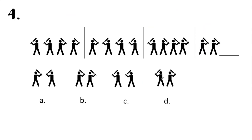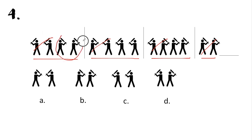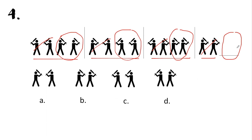We go to question number four. We have four sets, and each set has four batters. We are given the first two batters in the last set and asked to give the last two. Focus only on the relationship of the last two batters in each set. In the first set they face right, the second set they face left, the third set they face right again. So in the last set, they should both be facing left. The correct answer is letter C.